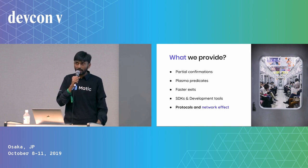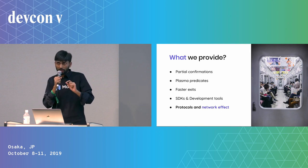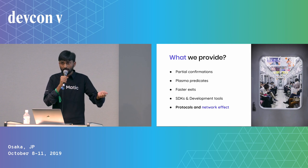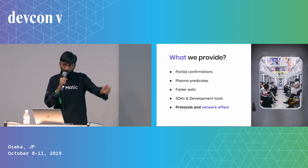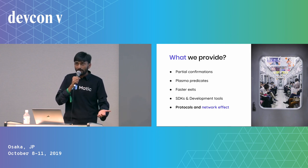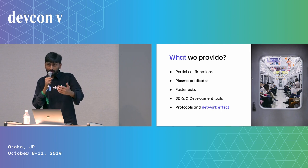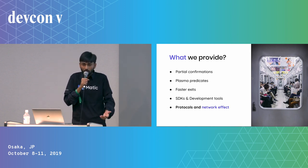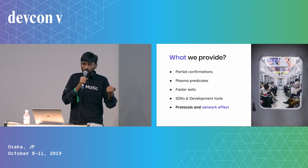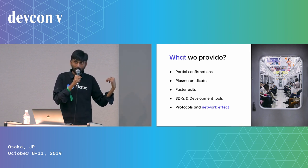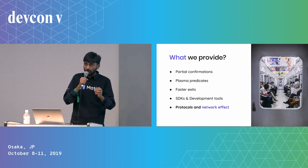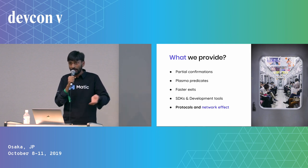For simple ERC-20 and ERC-721, it's just simple computation — plus or minus. If I'm sending a standard DAI to someone, it subtracts from my account and adds to theirs. But for more complex state, you may want to write predicates. Predicates let you define conditions — for example, if you're using a multi-sig wallet, when you move state from the sidechain to Ethereum, you ensure only the multi-sig wallet owners can withdraw or exit tokens from the sidechain to Ethereum. You can write those state conditions using predicate systems on MATIC, and for ERC-20 and most standards we provide built-in support for predicates.